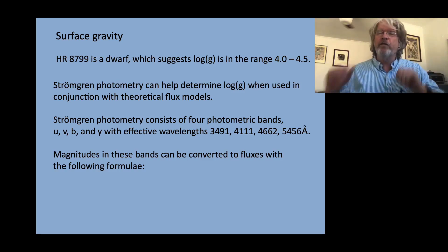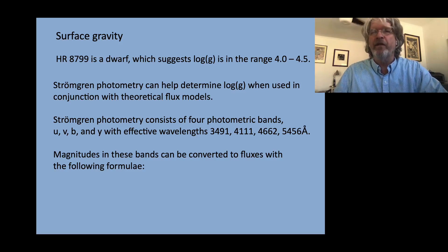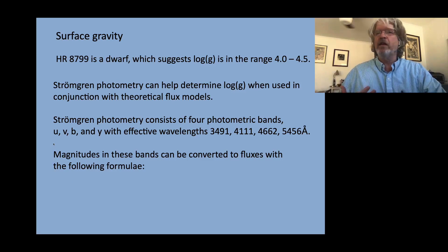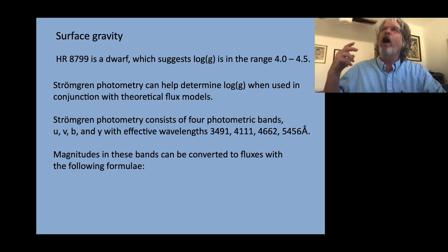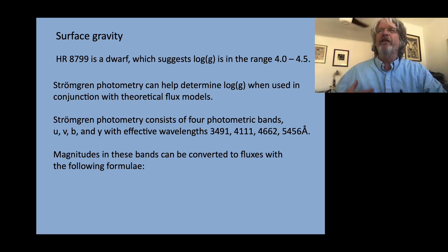The Strömgren photometric system is basically a system of four narrow passband filters in the blue. There's also a hydrogen-wide and a hydrogen-narrow filter that helps you measure the depth and width of the hydrogen Balmer line. The four Strömgren filters are traditionally U, V, B, and Y — notice in the Strömgren system the V and the B are flipped compared to the Johnson nomenclature, which the speaker finds confusing. The Johnson filters use capital letters — B minus V, U minus B — while the Strömgren system uses lowercase letters. Their effective wavelengths are 3491, 4111, 4662, and 5456 angstroms.